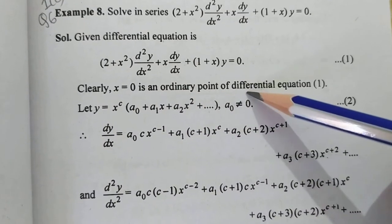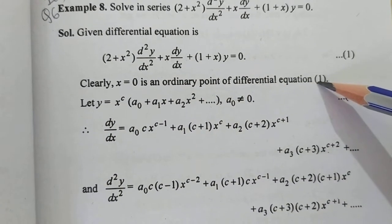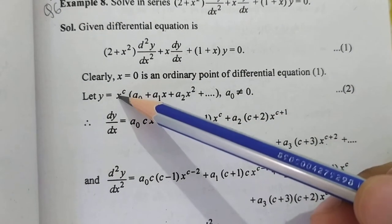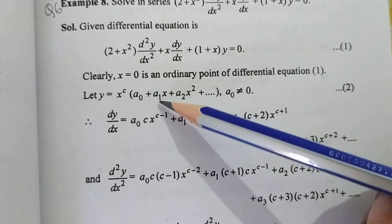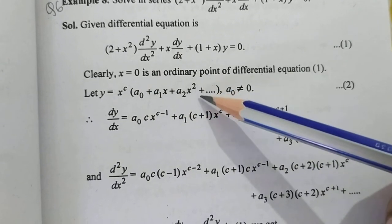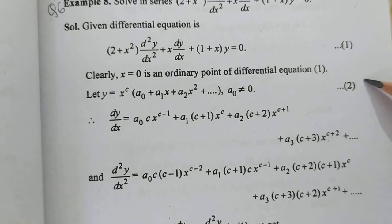Clearly x = 0 is an ordinary point of differential equation 1. Let y = x^c(a₀ + a₁x + a₂x² + ...), where a₀ ≠ 0. This is equation 2.